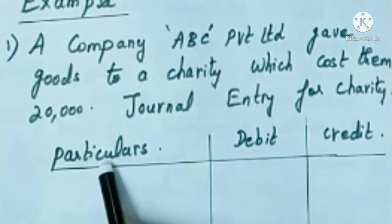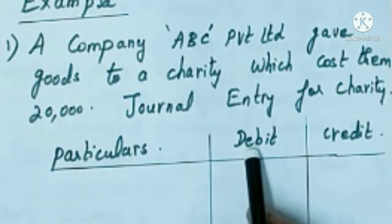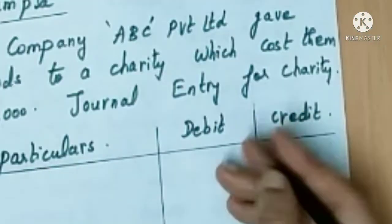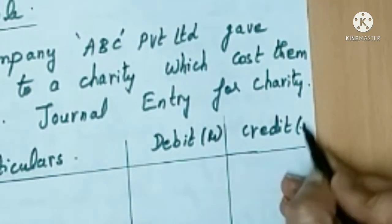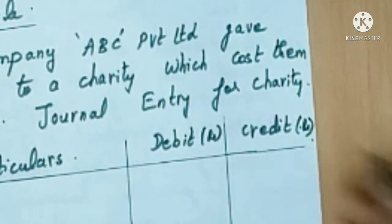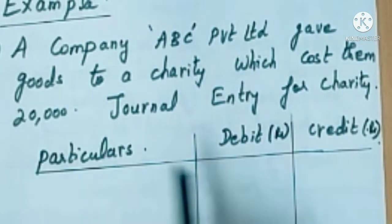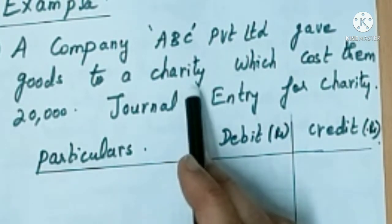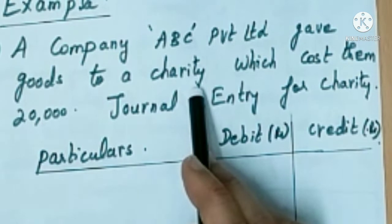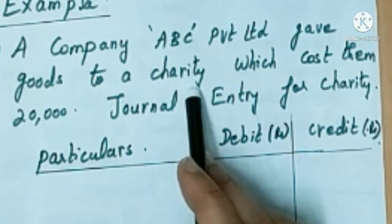The journal entry should be written with columns: particulars, debit, credit, and rupees. Now, charity given is always an expense, so charity account is debited. According to the nominal account rule, debit all expenses and losses.